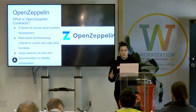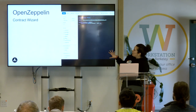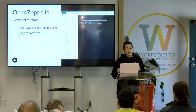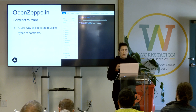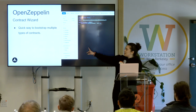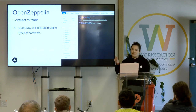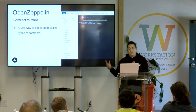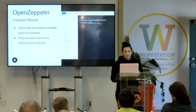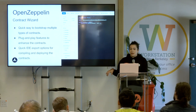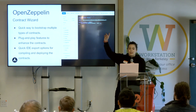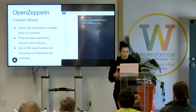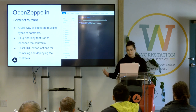OpenZeppelin has a ton of great tools and documentation, and one that I use on a very frequent basis is called the Contract Wizard. This is a screenshot of the Contract Wizard for an ERC-20 token. The Contract Wizard is a quick way to bootstrap multiple different types of contracts with a plug-and-play feature setup. As you can see on the left side, there are many different features you can choose from to plug right into the contract, and it's going to pre-populate that for you. All you have to do is specify the name of the token you want to create, the symbol, and how many get pre-minted at the very beginning. You have options to either copy it to your clipboard, open it in Remix, or download it to put into the folder of your choice.